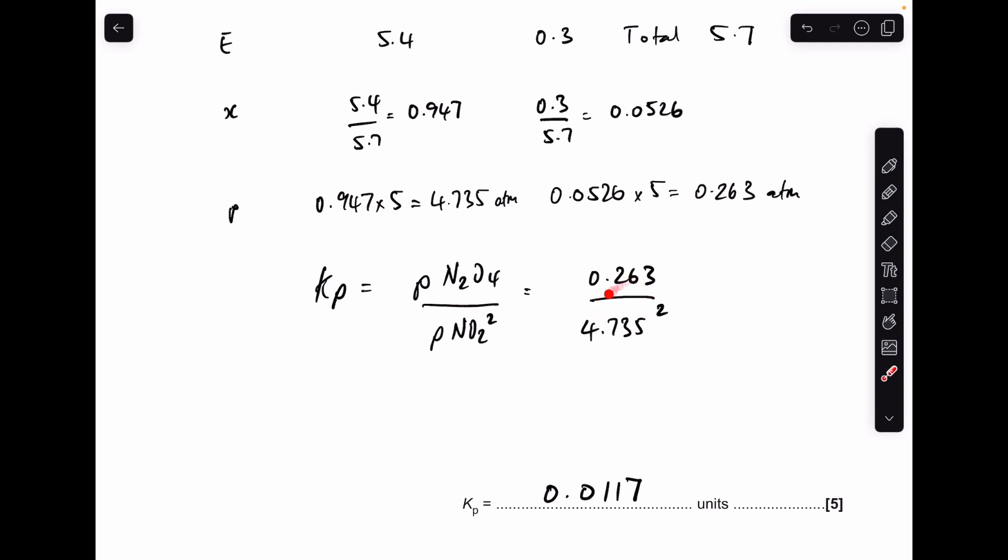There's my partial pressures in. Remember to square that one. So to three significant figures, it's coming out at 0.0117. I've deliberately left the units until the end, so I can just quickly explain the units.